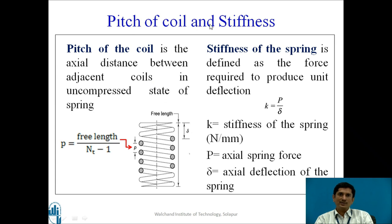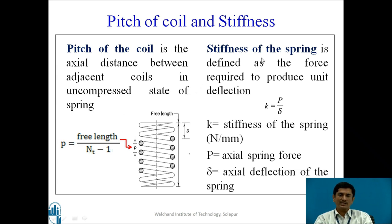Pitch of the coil is the axial distance between adjacent coils in the uncompressed state of the spring. Pitch is given as free length Lf divided by (Nt − 1). Stiffness of the spring is defined as the force required to produce unit deflection, given as k = P divided by delta.